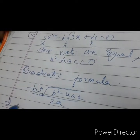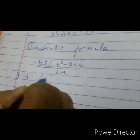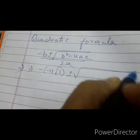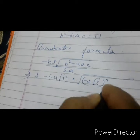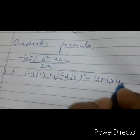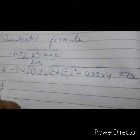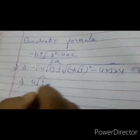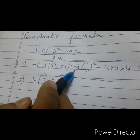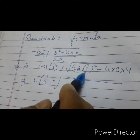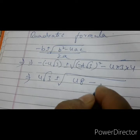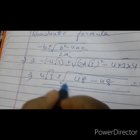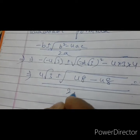What is a, what is b, and what is c? I am substituting. b is minus 4 root 3, so minus of minus 4 root 3, plus or minus under root: minus 4 root 3 whole squared minus 4 into 3 into 4. This gives 4 root 3 plus or minus. We just solved this — 4 squared is 16, root 3 whole squared gets cancelled, giving 48 minus 48, which equals 0. So this becomes 0.